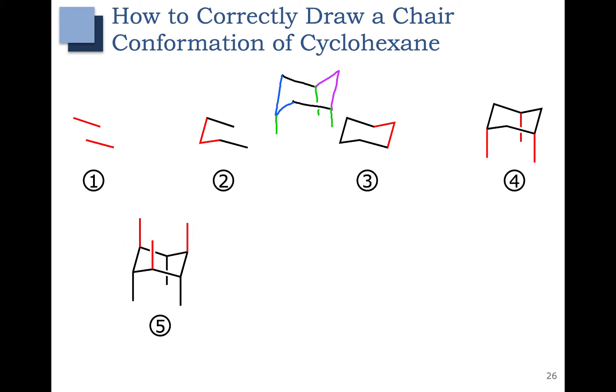I'm going to go ahead and draw these in blue: one, two, and three. Now at each carbon where we have a group pointed up, we need one pointed down. I'm going to go ahead and draw those in black: one, two, three.